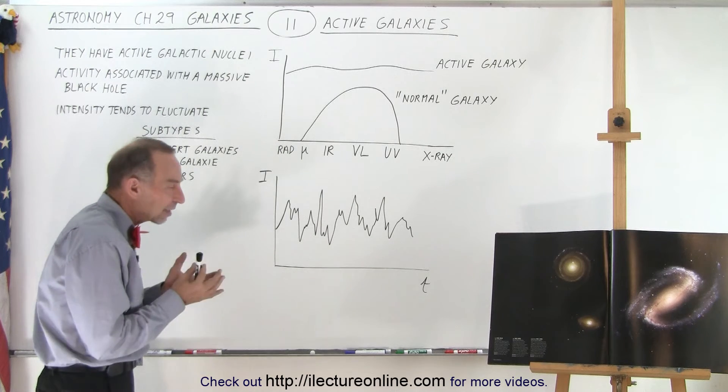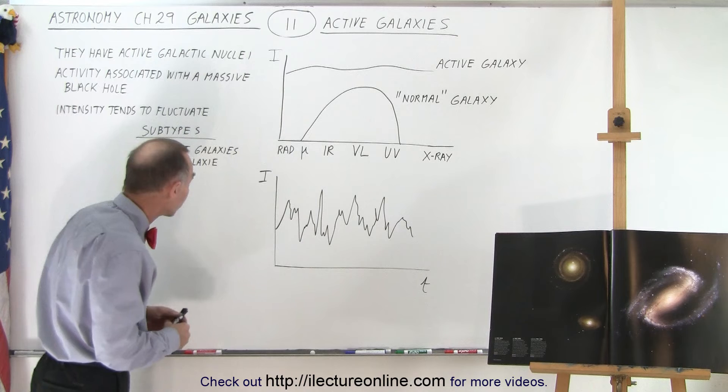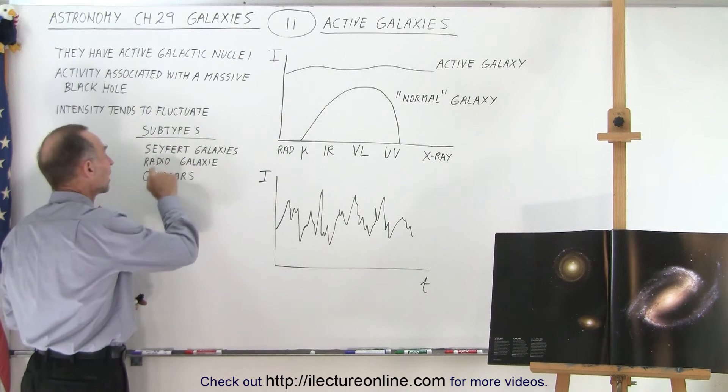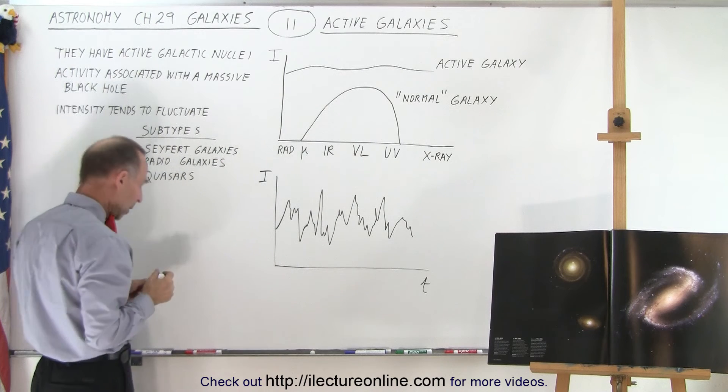When we talk about active galaxies, we have various subtypes. The three major subtypes are the Seyfert galaxies, the radio galaxies, and quasars.